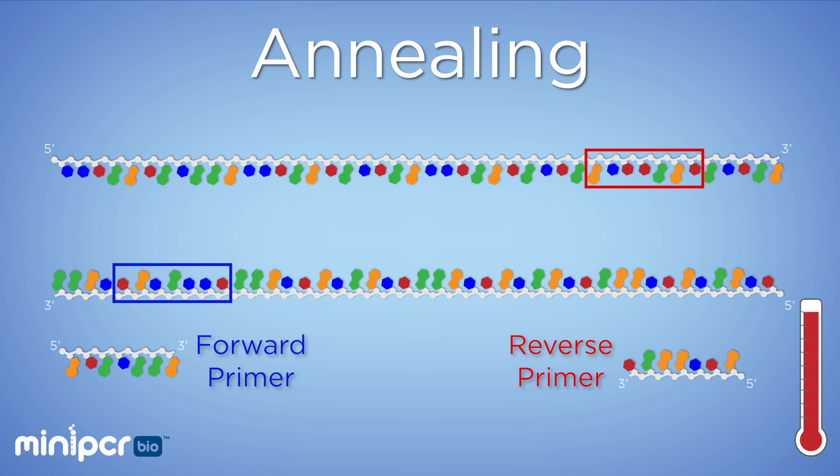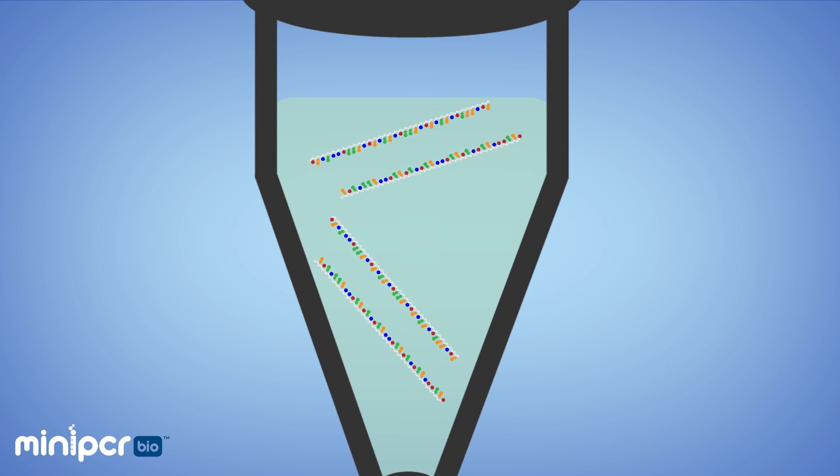Primers are typically around 20 bases long. When we cool our reaction down, the primers will anneal, or stick, to their complementary regions on the template DNA. Lowering the temperature allows hydrogen bonds to form between the primers and the template at areas where the sequence is complementary. We add lots of extra primers to increase the chances that they stick to the DNA, rather than the DNA strands annealing back to each other.